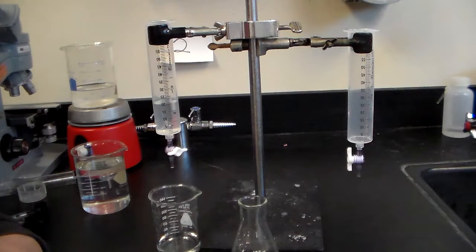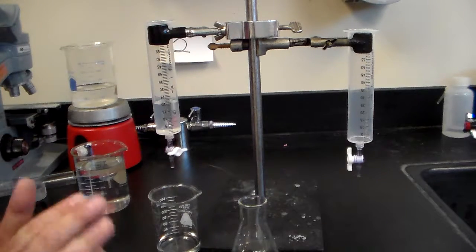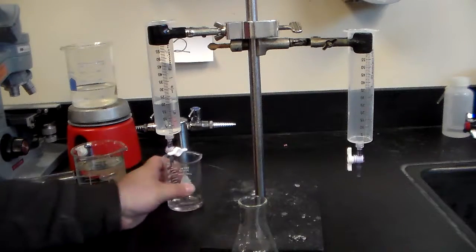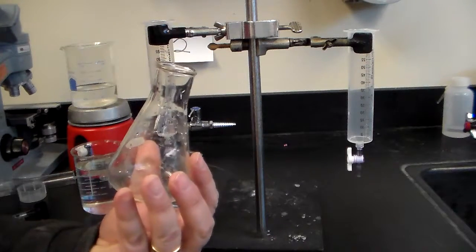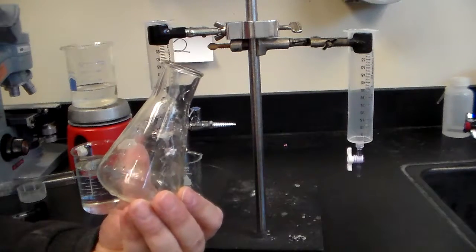Now we're at the point where we're going to do the titration. You're going to get your Erlenmeyer flask and you're going to get some indicator from your instructor, that would be Mr. Canoe.